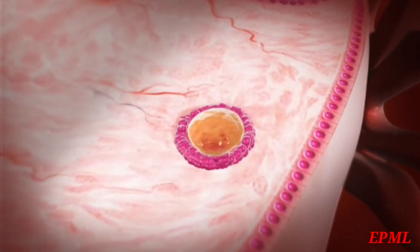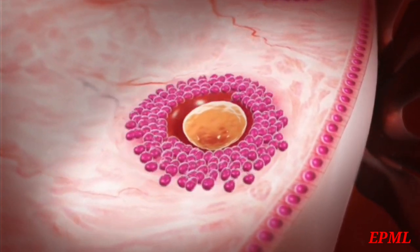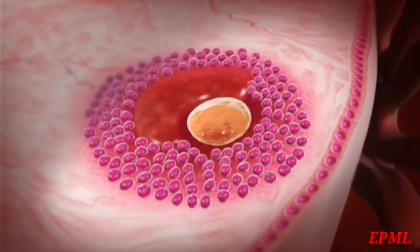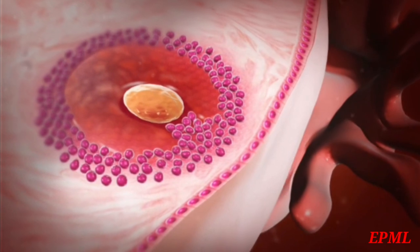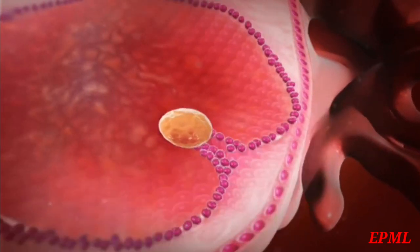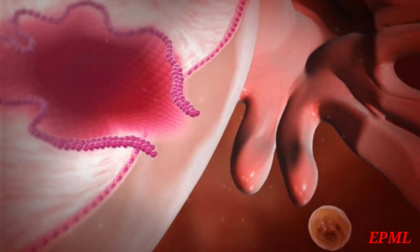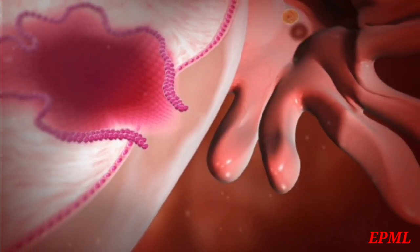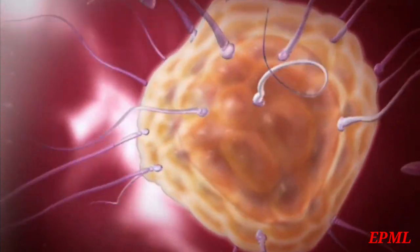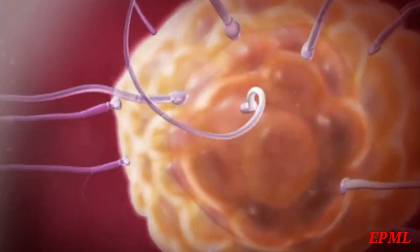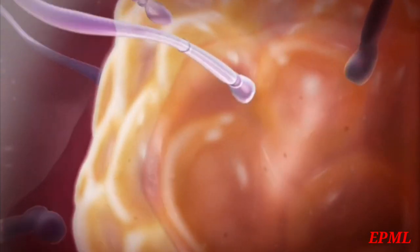Some primary oocytes become secondary oocytes — 23-chromosome cells that begin meiosis II, then pause. Each month, one secondary oocyte is released into the uterine tube. Meiosis II is completed when the oocyte is fertilized, and the resulting ovum can develop into a zygote.